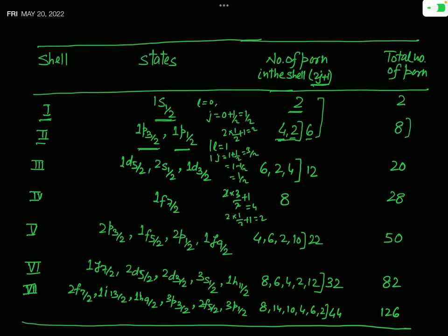The third shell has three energy states: 1d5/2, 2s½, and 1d3/2. For j = 5/2: 2j+1 = 6; for j = 1/2: 2j+1 = 2; for j = 3/2: 2j+1 = 4. Total in third shell: 6+2+4 = 12. Cumulative total: 8+12 = 20, which is the third magic number.